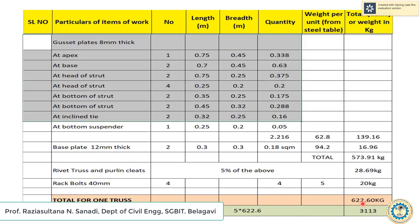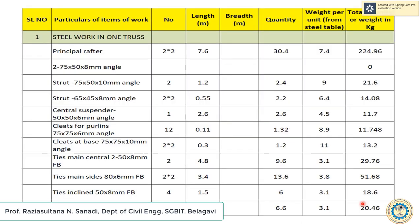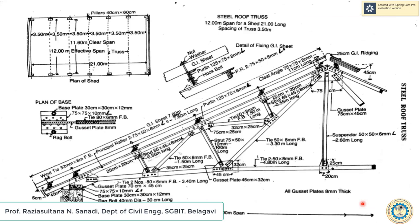Next are gusset plates, which are 8 mm thick. They are provided at the apex, at the base, at the head of the strut, at the bottom of the struts, at the inclined tie, and at the bottom suspenders, as well as base plates. These are calculated in square meters, then multiplied by weight per unit to get the total quantity in kg.